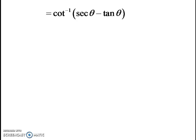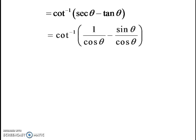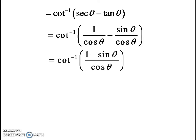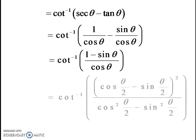Now convert sec theta as 1 over cos theta, and tan theta as sin theta over cos theta. So after subtracting, you can write the expression as 1 minus sin theta over cos theta.